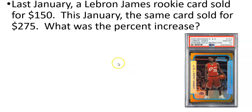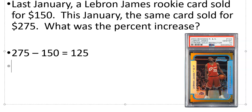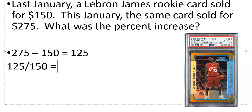Last January, LeBron James' rookie card sold for $150. This January, the same card sold for $275. What is the percent increase? I do 275 minus 150 and get 125. Then 125 over the original 150 equals X over 100. Typing into my calculator, I get 83.33%.